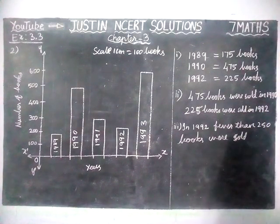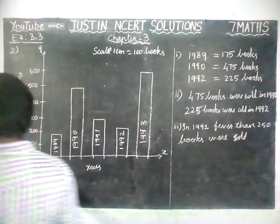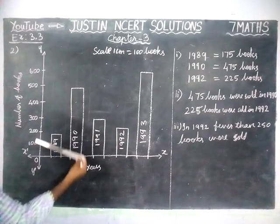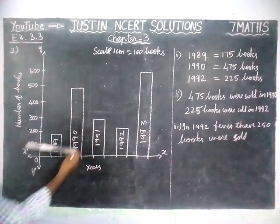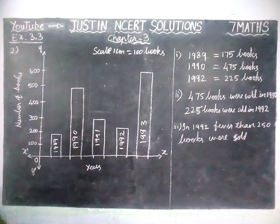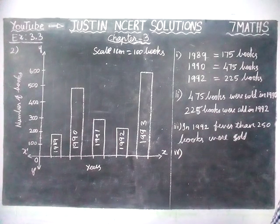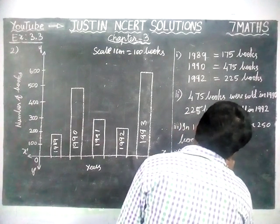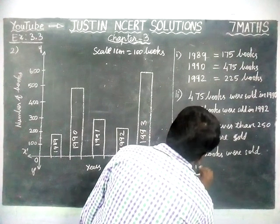In the year of 1992, fewer than 250 books were sold. Next, the fourth question: Can you explain how you would estimate the number of books sold in 1989? Here, if you are using the scale, the answer is coming above 150. The center point is between 150 and 200, so we can say that this is 175. Therefore, 175 books were sold in 1989.